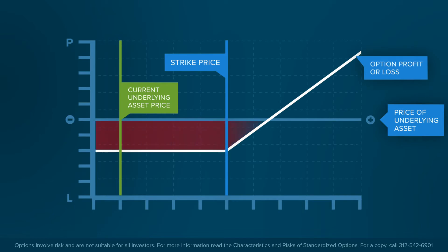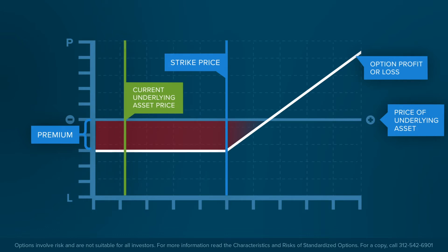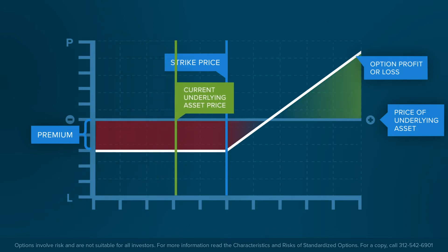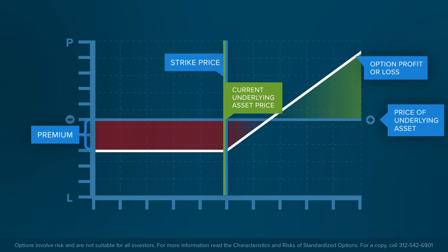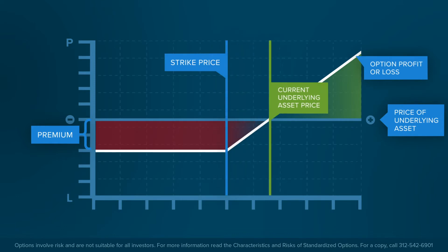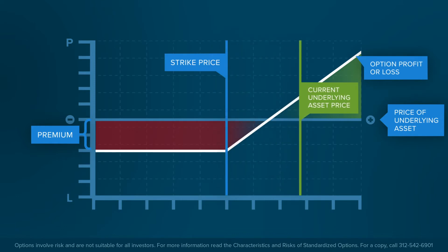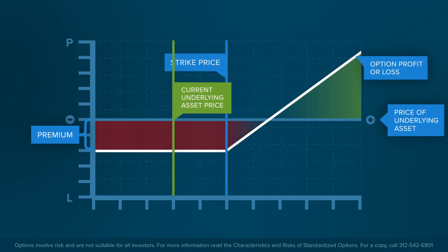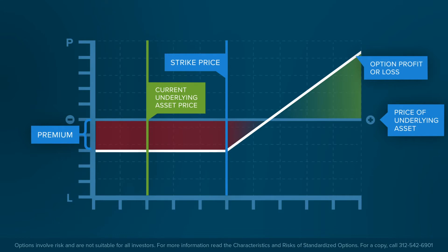The buyer of the option pays a premium to the seller for this right. For a call option, the premium can be shown as a fixed cost beneath the chart. If the market price of the underlying asset rises above the strike price, the cost of the premium is offset by an increase in the option's value and the option may become increasingly profitable. If not, an option buyer can lose the entire premium.